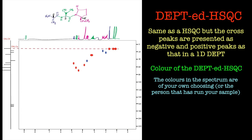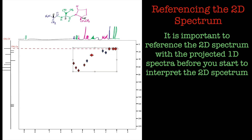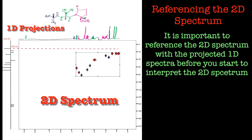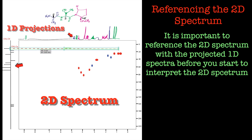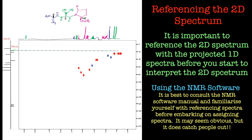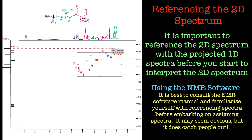One thing that's really important for interpreting any 2D spectrum is to make sure it is well referenced. The 2D spectrum needs to be referenced with the projected 1D spectra at the top. In your NMR software package you'll be able to type in a command — for example SR or something like source reference — to set the reference according to the chemical shift in your 1D spectra. Once that is sorted you'll then be able to assign it correctly, so all your carbons and all your proton signals will be aligned. It's a two-dimensional reference and that needs to be set initially — that's very important.